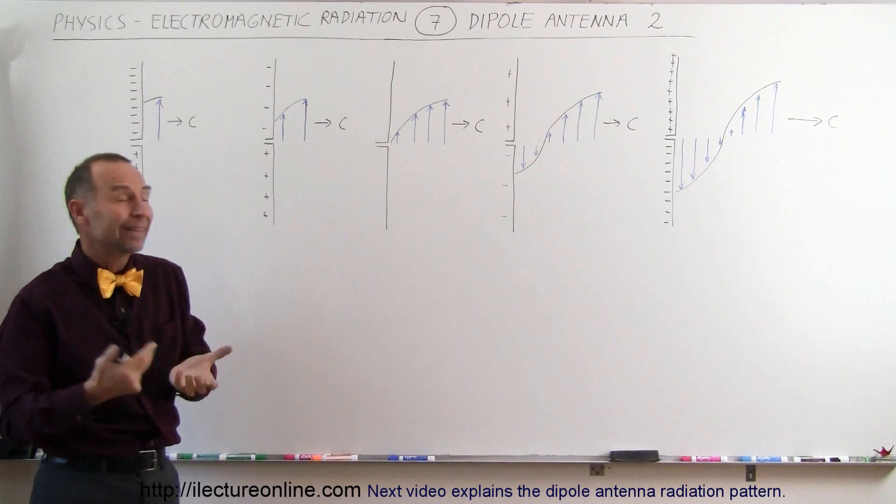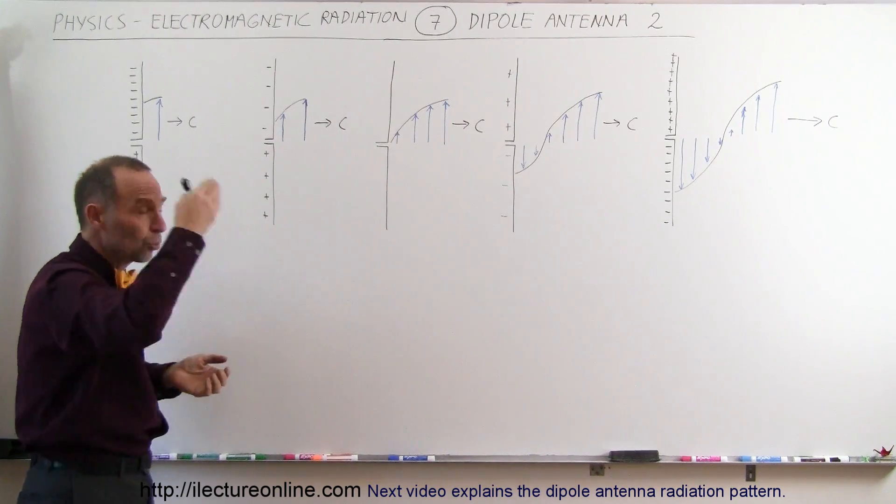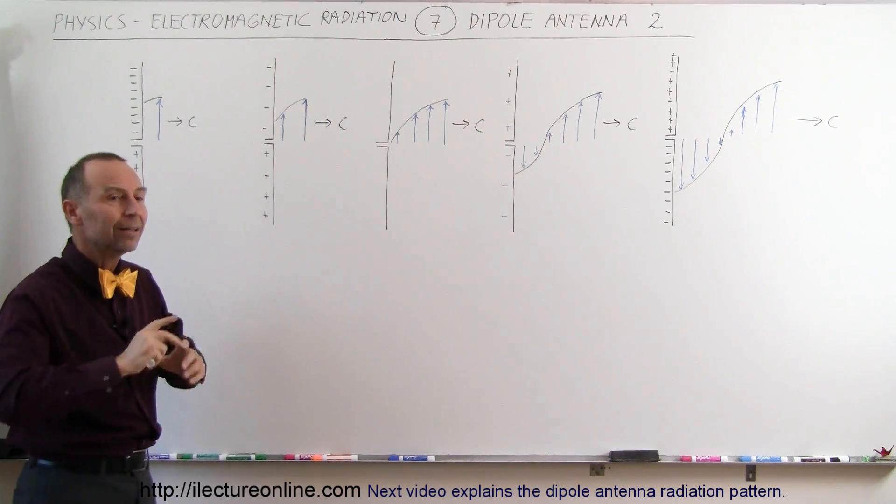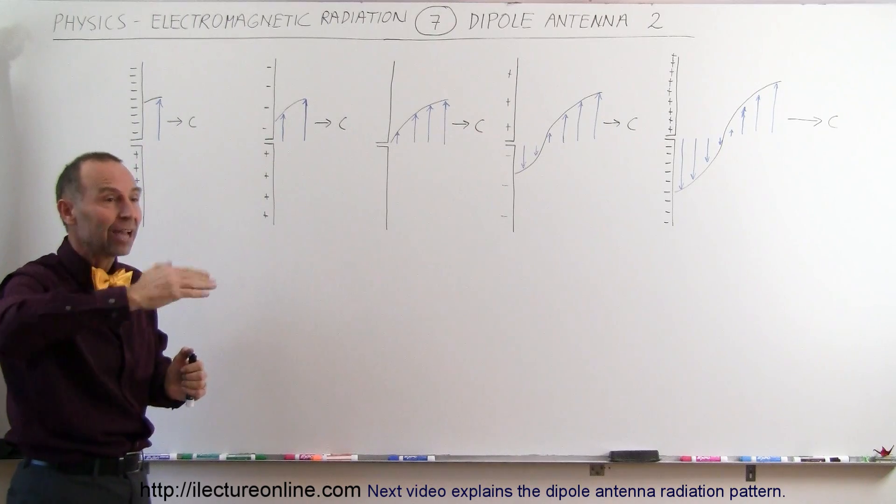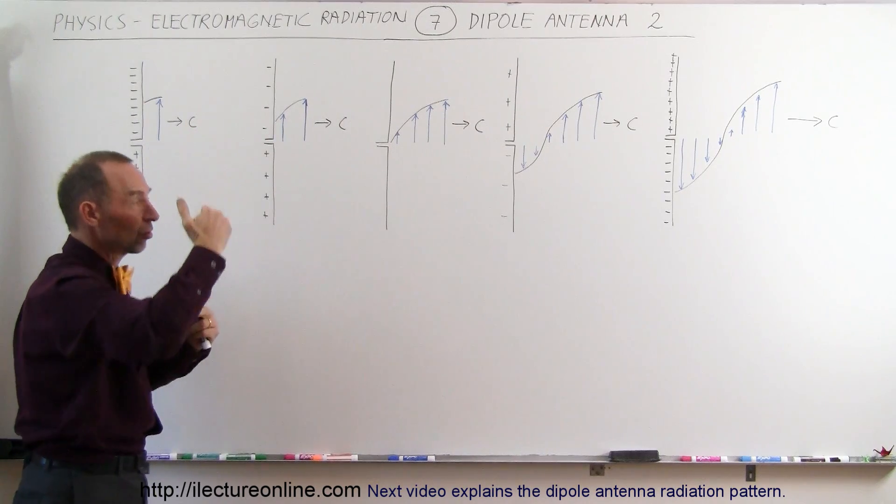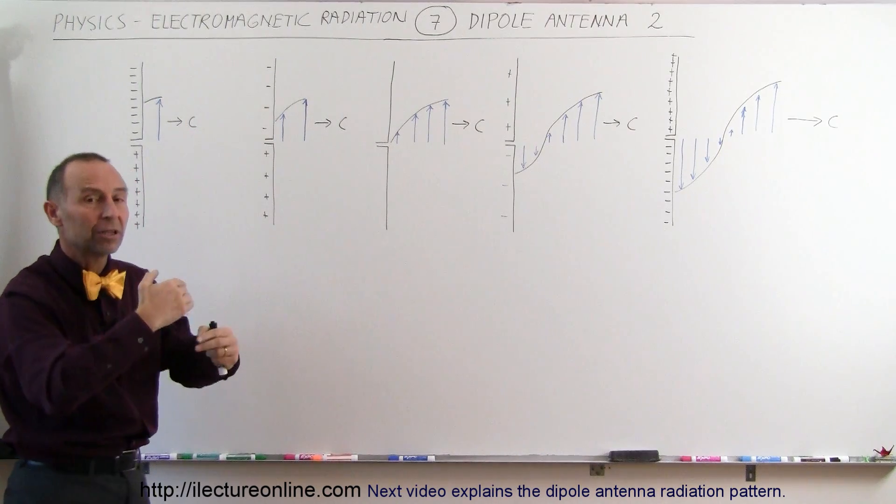So that's the basics of how an antenna works. You just keep on switching the polarity of the antenna. Of course it's not done instantaneously, it's done over time as a sine wave. Charges increase, charges decrease, then change polarity.